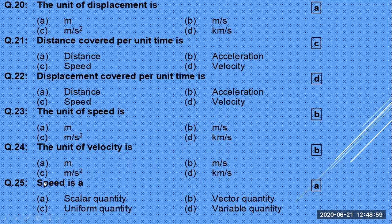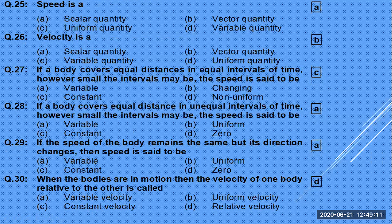Speed is a scalar quantity. It does not have any direction. To represent speed, you do not need direction, so speed is a scalar quantity.